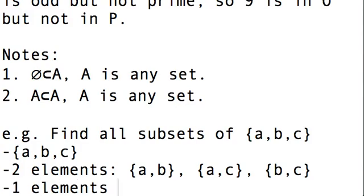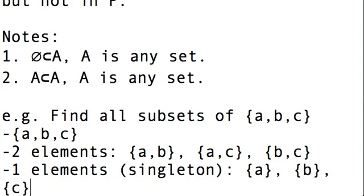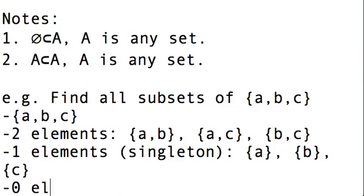Now, those are all the possible ways of having two elements, so then the next kind of subsets will be one element. We can call these singleton sets because they only have a single point in them. Well, if you have one element, you've got either A, B, or C. So you've got A, B, and C. And how about no elements? Well, there's only one set which has no elements, which is the empty set.